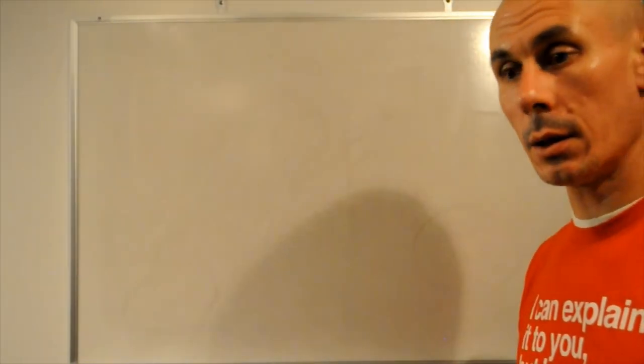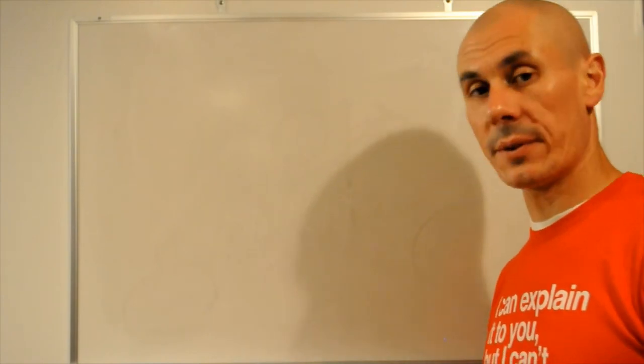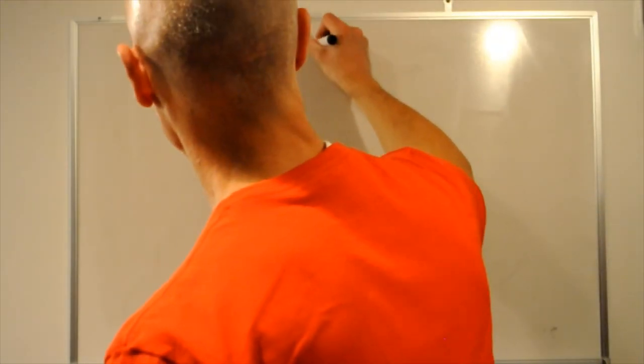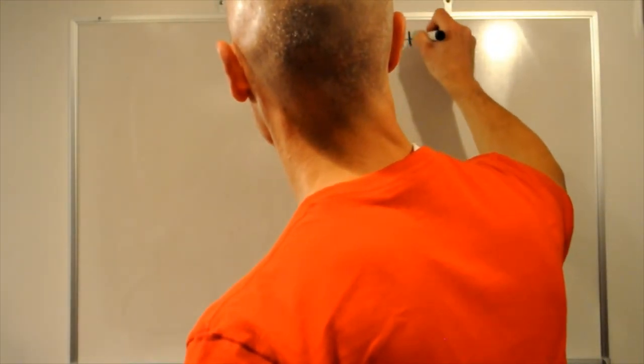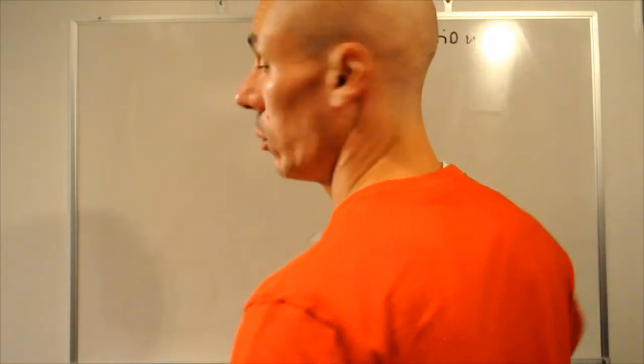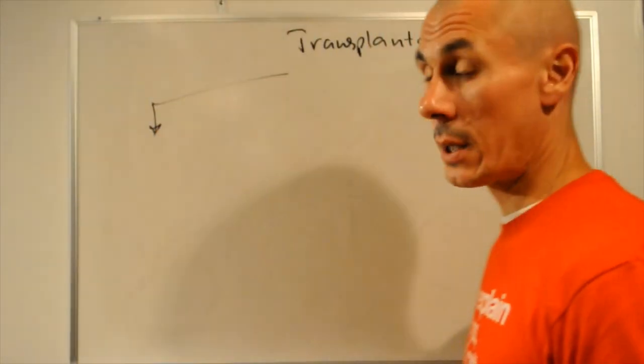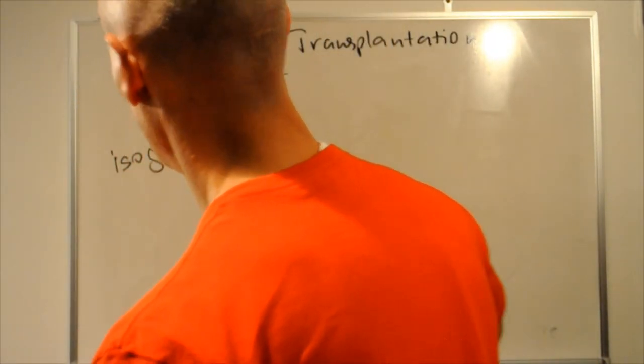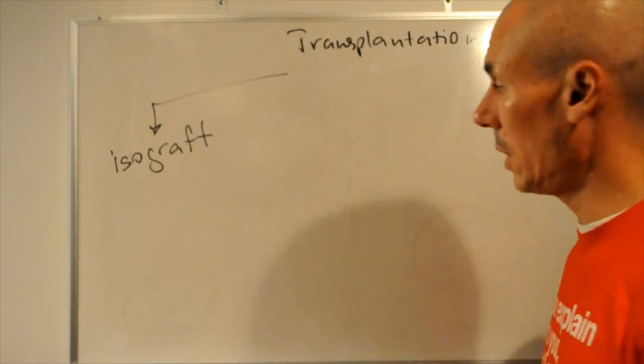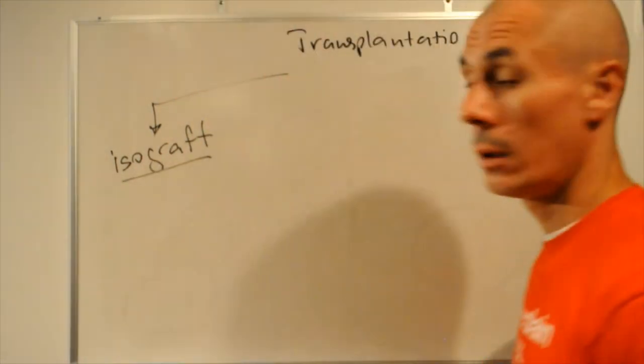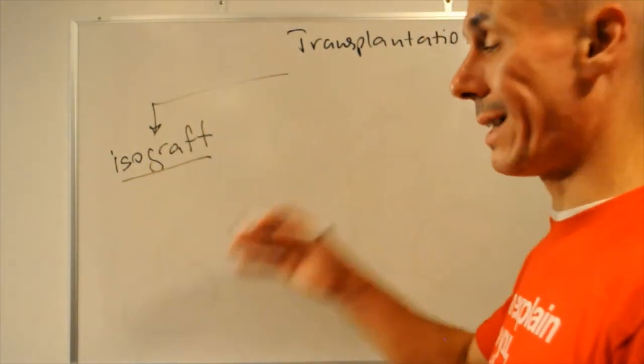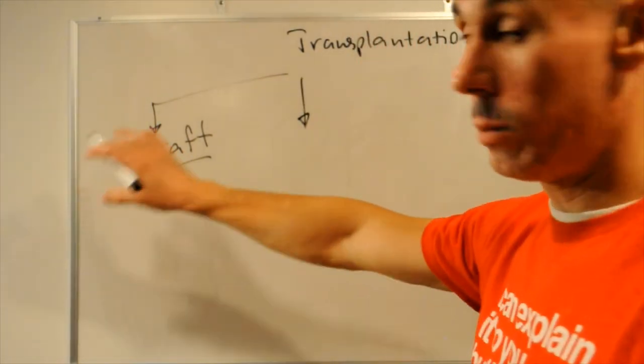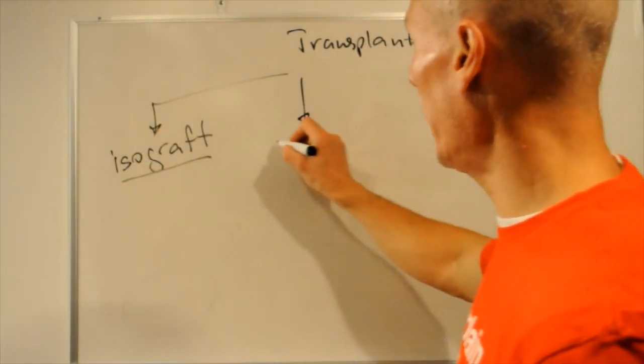So, lastly, we will chat about transplantation and a few different types of immunodeficiencies. So, transplantation. Four types that you need to know. First type is isograft. Isograft is the transplantation from one identical twin to another. So, basically no rejection here. Next one is autograft. Transplantation from self. So, for instance, when burn patients receive the transplant, the skin graft from the back onto the wounded area.